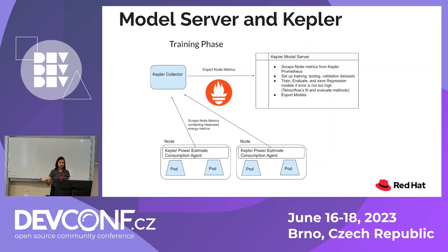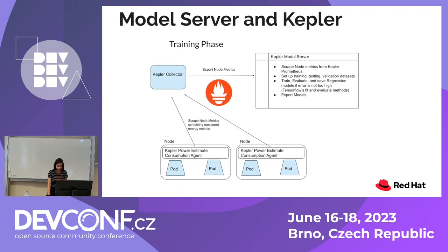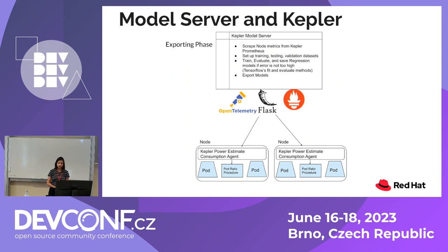There are two phases: the training phase and the exporting phase. For training, the Kepler model server has agents sitting on each of the nodes. These agents scrape node metrics and export them to Prometheus. The Kepler model server then scrapes Prometheus and forms the dataset for both training and testing. It trains the model, evaluates it, and if it's of acceptable accuracy, you can use the model. For using or exporting the model, Kepler uses Flask endpoints. We are also going to adopt OpenTelemetry, but you can also load the model in memory to do estimates.